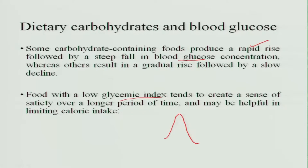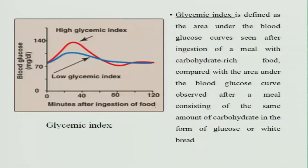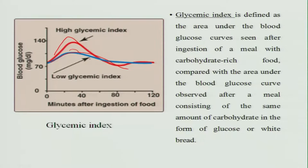Eating fibrous food maintains satiety over a long period of time and releases glucose very slowly into the blood, thereby also limiting calorie intake. The glycemic index is measured after digestion of a carbohydrate-rich meal and compared to the area under the curve of glucose. A steep rise in the curve indicates a high glycemic index, which is not good for health. You should always take low glycemic index foods to maintain healthy, normal blood glucose levels.